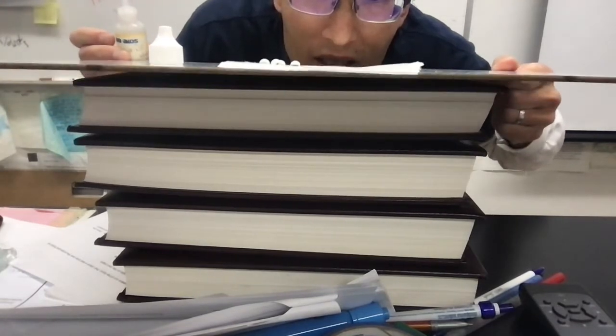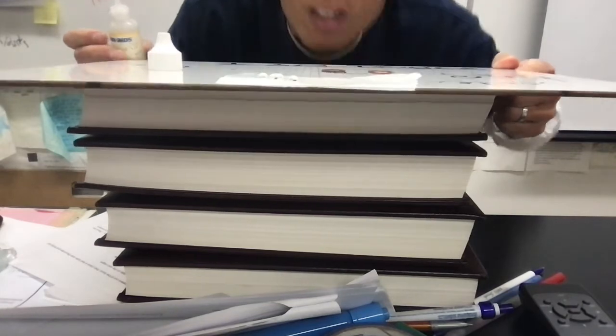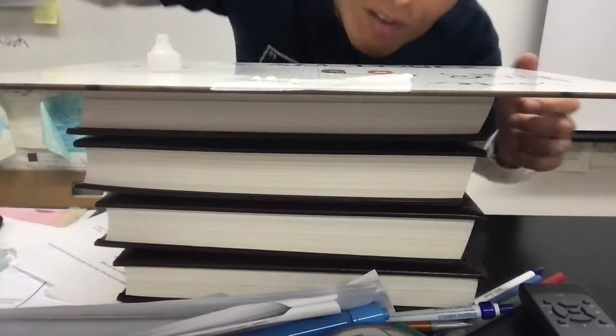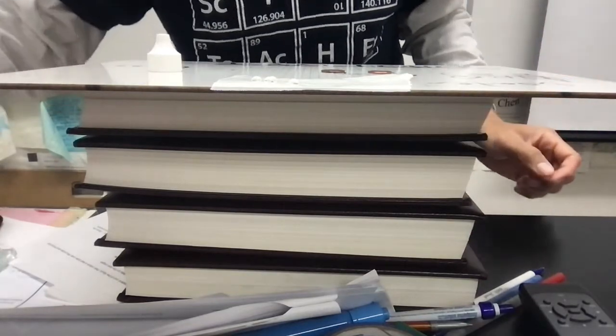You can see the shape of the drop is pretty rounded like that and it's kind of moving around. If I move it around it kind of slid a little bit. Now this is acetone.